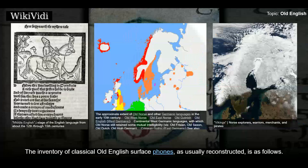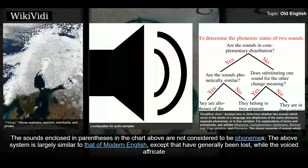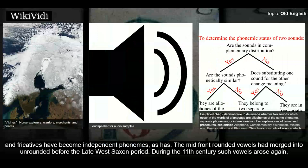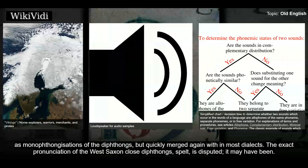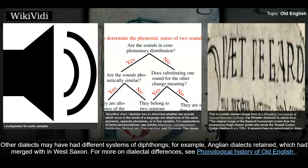The inventory of classical Old English surface phones, as usually reconstructed, is as follows. The sounds enclosed in parentheses in the chart are not considered to be phonemes. The above system is largely similar to that of modern English, except that certain sounds have generally been lost, while the voiced affricate and fricatives have become independent phonemes. The mid-front rounded vowels had merged into unrounded before the late West Saxon period. During the 11th century such vowels arose again as monophthongizations of the diphthongs, but quickly merged again within most dialects. Anglian dialects retained distinctions which had merged within West Saxon.